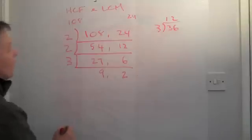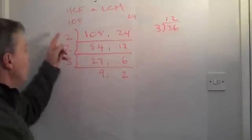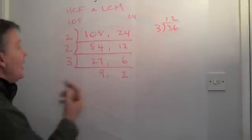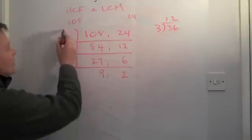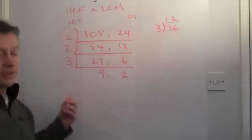Now, what that leaves me is the ability actually to work out the HCF and the LCM from these numbers here. And the HCF, the highest common factor, is simply worked out by multiplying those numbers on the left hand side together.